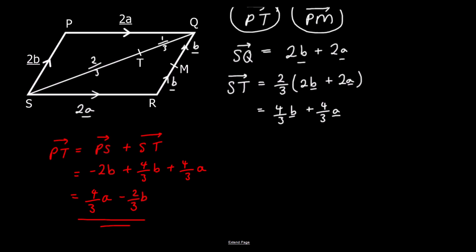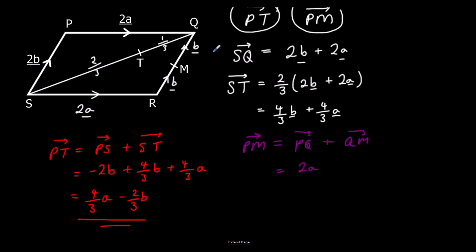We also want P to M. Going P to Q then Q to M: P to Q is 2a, and Q to M is minus b. So P to M is 2a minus b.